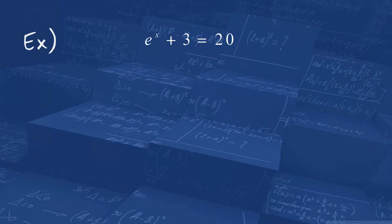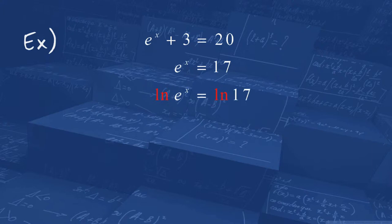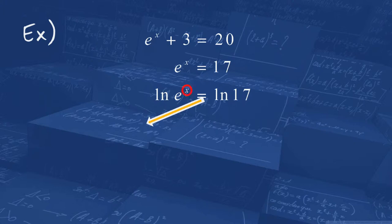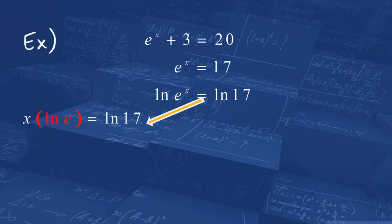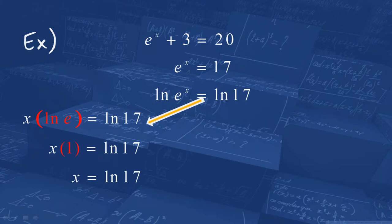For example: e to the x plus 3 equals 20. We get the e to the x by itself, because we have to get that variable out of the exponent position. Logarithms do that. This one's different — look at our base. Our base is e. We usually use the common log or the natural log. If we see nothing but numbers, use the common log. If we see an e, use the natural log — that way we have the same base. So we take the natural log of both sides. We can move x to the front, then divide by natural log of e, but the natural log of e equals 1, which is handy. So this simplifies to x equals the natural log of 17, which is approximately 2.8332.